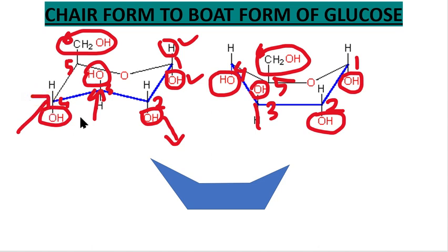So this is all about how we can convert the chair form to the boat form. Remember, we change the position of carbon 3 and carbon 4, and the orientation of hydrogen and oxygen groups remains the same in both the chair form and the boat form. Thank you for watching this video.